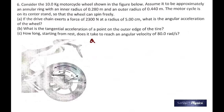In number 6, you have a 10 kilogram motorcycle wheel shown in the figure. Assume it to be approximately an annular ring. It's a ring. Inner radius and outer radius both given. The motorcycle is on its center stand, and if the drive chain exerts a force of 2300 newtons at a radius of 5 centimeters, what's the angular acceleration?